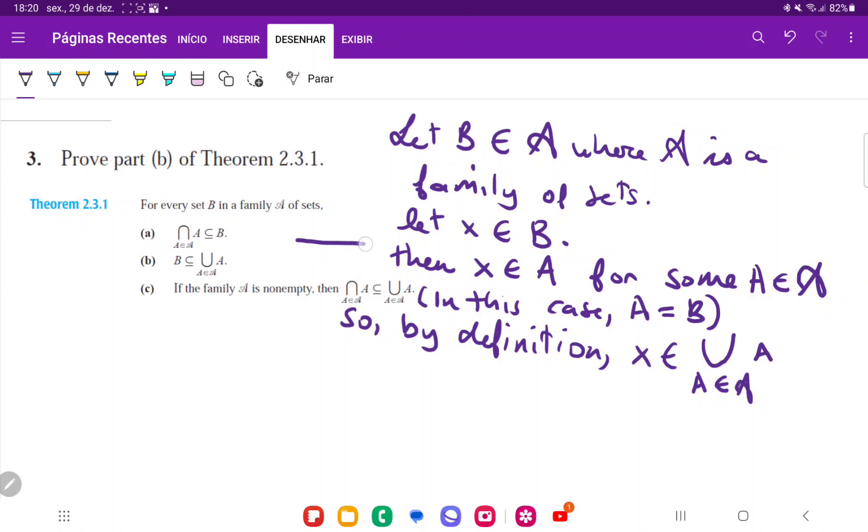The reason that we made this line, even though we already know that X belongs to B, the reason that we included that line is because this is the definition for the union. So, by definition, X belongs to the union. Thus, B is a subset of that union of A.